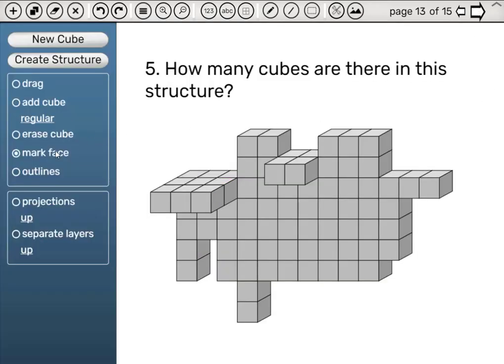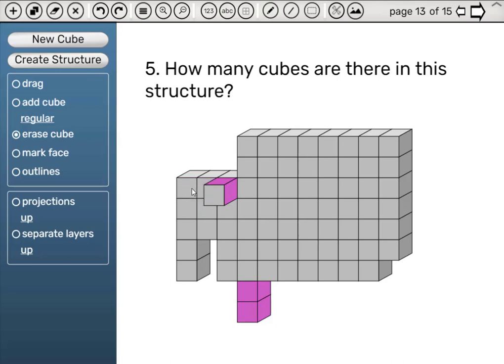Now for the final structure. Let's use the Mark Face tool. These two cubes fit in here. These two cubes fit here. These two fit in here. And these six will fit here. Let's solve this one manually. We'll erase these two and place them here. Erase these two and place them here. Erase these six and place them here. So we have 11 by 7, which is 77 minus 1, giving us 76.